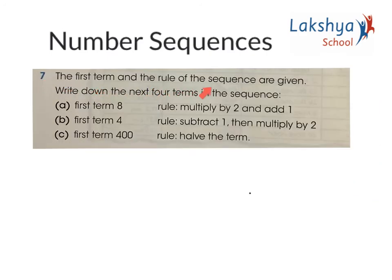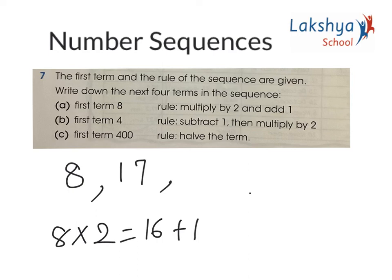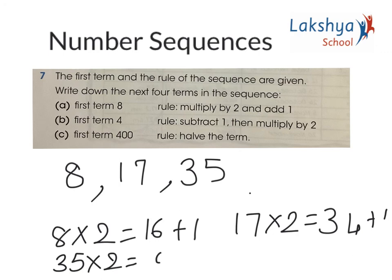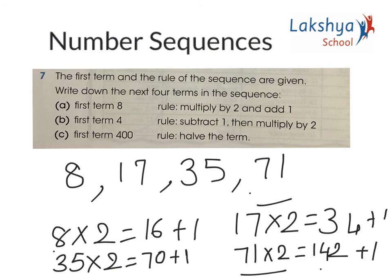Question 7: The first term and the rule of the sequence are given. Write down the next 4 terms. Let's look at part A. First term is 8. Rule is multiply by 2 and add 1. So, 8 multiplied by 2 gives 16 plus 1 gives 17. Next, 17 times 2 gives 34 plus 1 gives 35. Then 35 times 2 gives 70 plus 1 gives 71. Then 71 times 2 gives 142 plus 1 gives 143. This is the sequence. Work out B and C similarly.